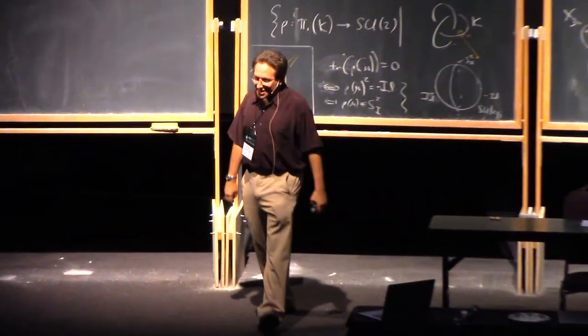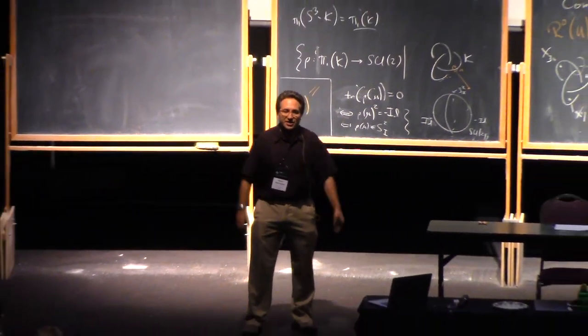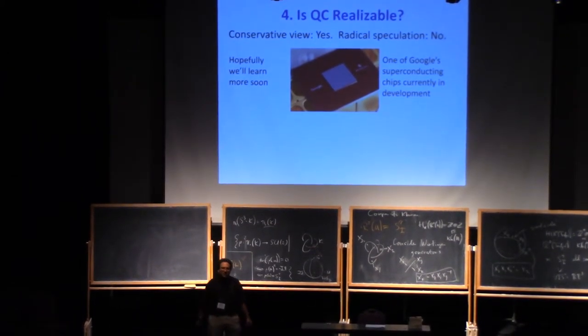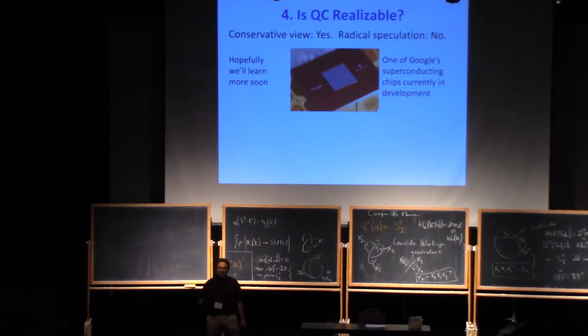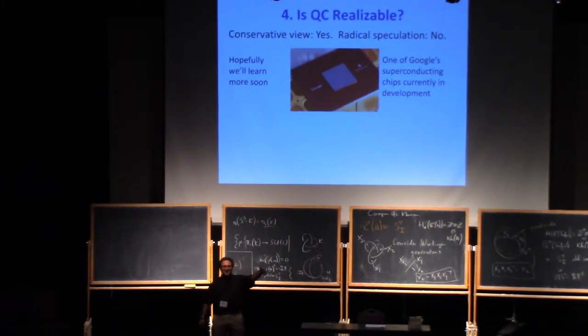But we're actually going to get more information relevant to these questions very, very soon. You may have heard that there are now efforts underway all over the world to actually try to build these things. So Google is right now building superconducting chips with 50 to 70 qubits. IBM is also building superconducting chips with about that number. There's people doing trapped ions, a few dozen qubits so far. There's a bunch of startup companies trying different approaches, photonic qubits. Microsoft is trying an even more speculative, even by the standards of quantum computing approach, which is called topological qubits. They haven't managed to make even one of them yet. But if topological qubits can be made to work, some people think that that's really the way to scale it up.